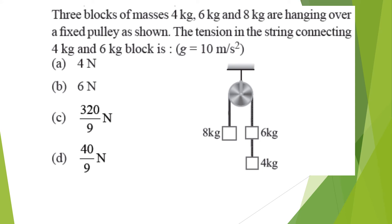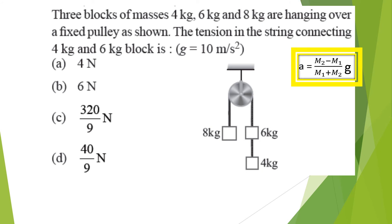Example using the Atwood machine formula: a = (m₂ − m₁)/(m₁ + m₂) × g. Using g = 10 m/s², consider the system as two bodies — one of 8 kg and one of 10 kg (treating the connected masses together). The acceleration equals 10/9 m/s².